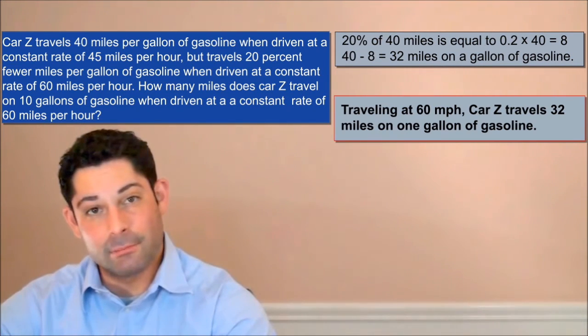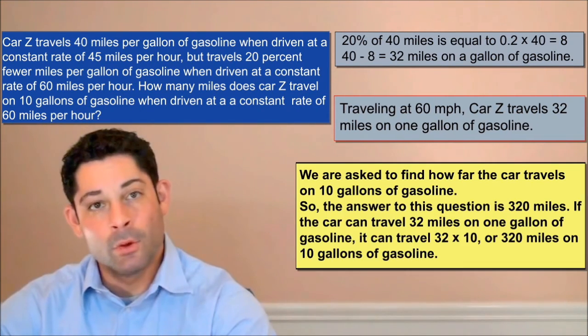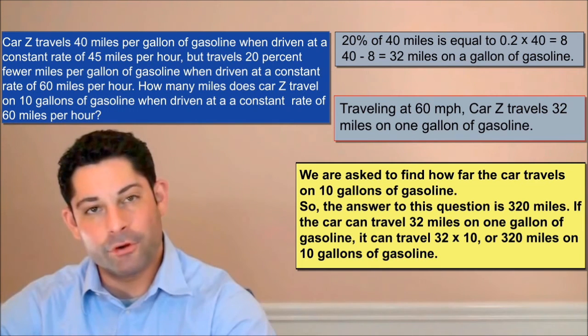Traveling at 60 miles per hour, car Z travels 32 miles on one gallon of gasoline. We're asked to find how far the car travels on 10 gallons of gasoline.